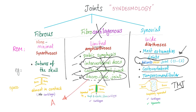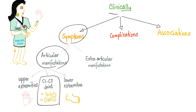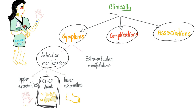No involvement of the sacroiliac joint in rheumatoid — this is different from ankylosing spondylitis, one of the seronegative spondyloarthropathies that involves the SI joint. No involvement of the intervertebral disc in rheumatoid, unlike degenerative disc disease, which is similar to osteoarthritis. In the previous video we discussed the articular manifestations; today we cover C1 and C2, and the next video will cover the extra-articular manifestations.